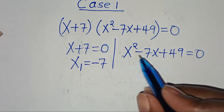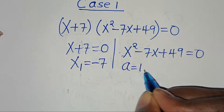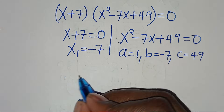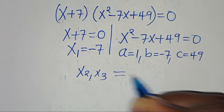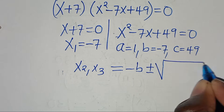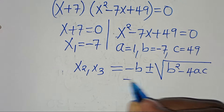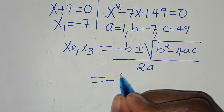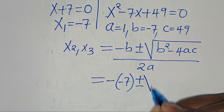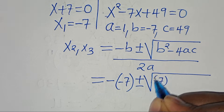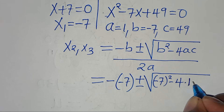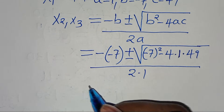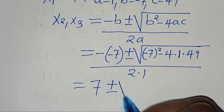The second part is x squared minus 7x plus 49 equals 0, which is a quadratic equation where a is equal to 1, b is equal to minus 7, and c is equal to 49. We can solve for x2 and x3 by applying the quadratic formula, which is minus b plus or minus the square root of b squared minus 4ac, everything divided by 2 times a. Substituting the values: minus minus 7, plus or minus the square root of minus 7 squared, subtract 4 times 1 times 49, everything divided by 2 times 1.